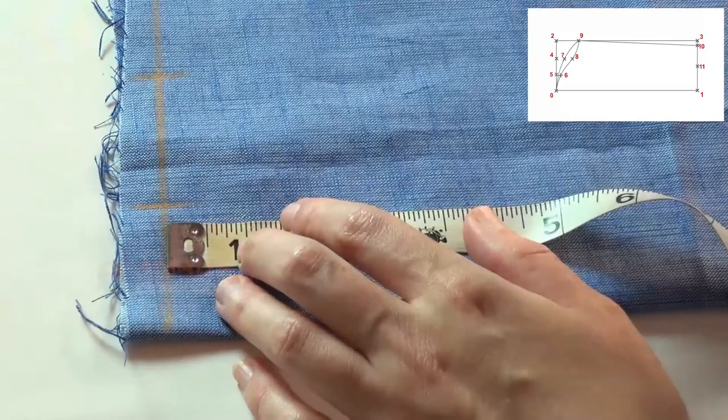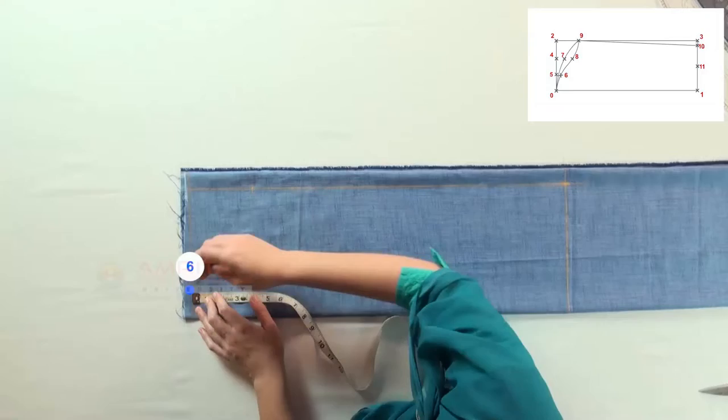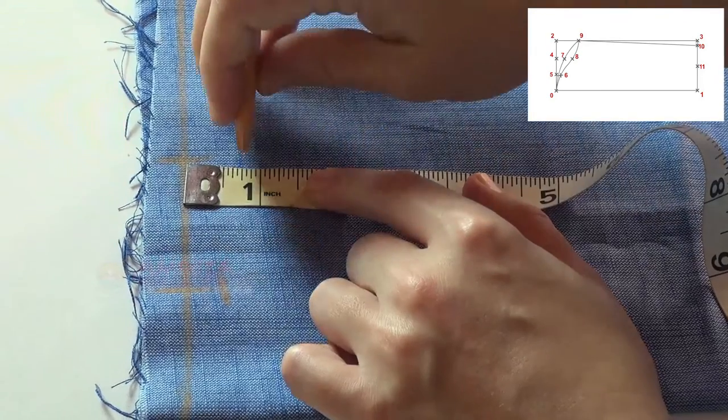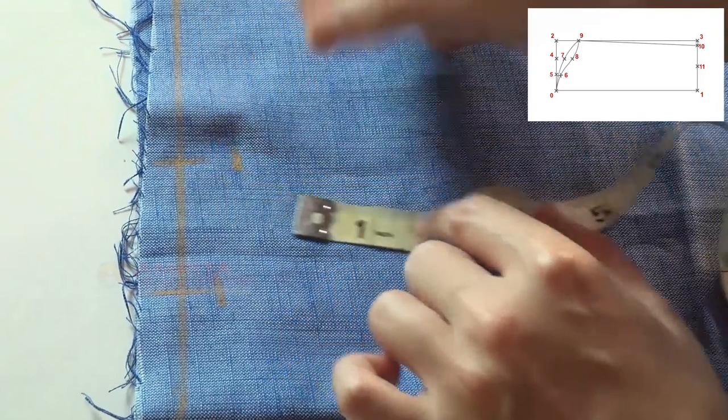From point five, measure half inch downwards and make a mark. This is point six. Then from point four, measure 3/4 inch downwards and make a mark. This is point seven.